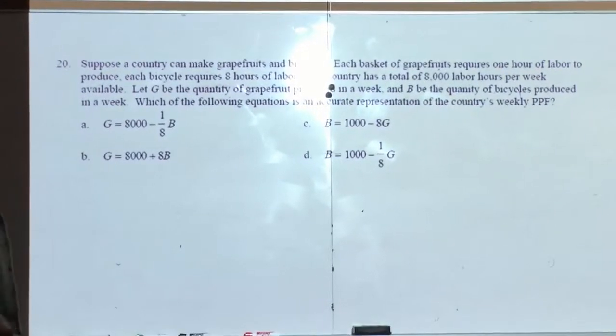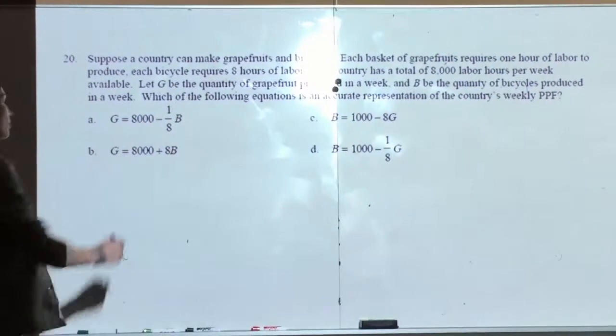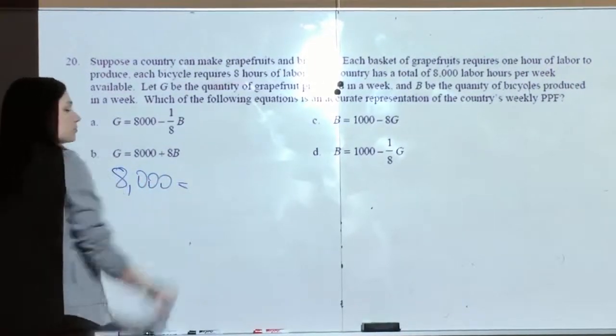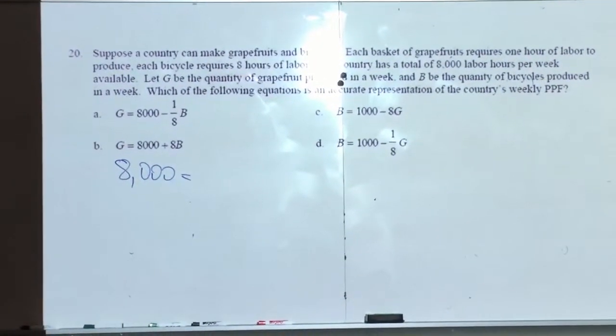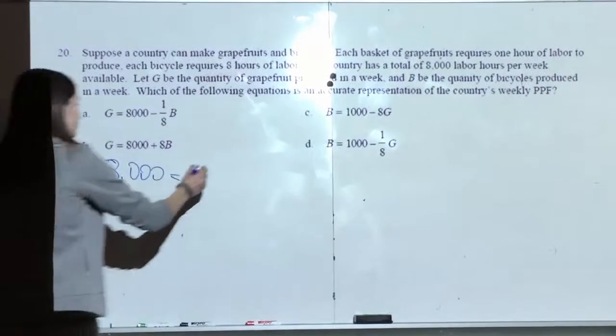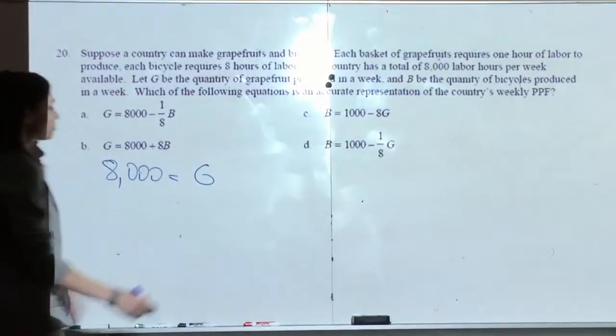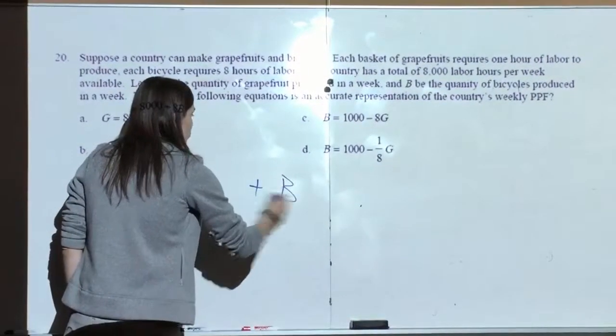Let's think of it logically. They have 8,000 labor hours. In those 8,000 hours, they can either produce G, which is grapefruits, or they can produce bicycles.